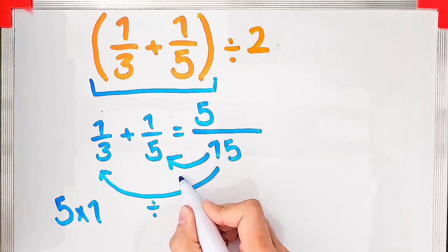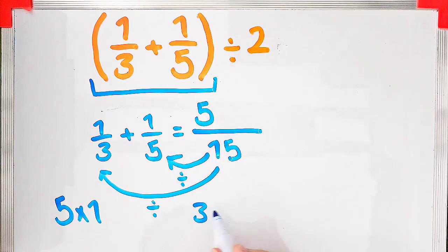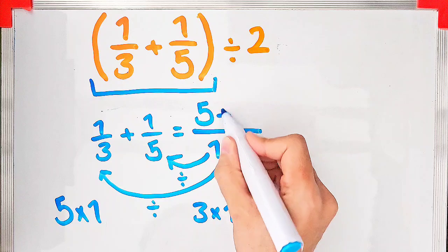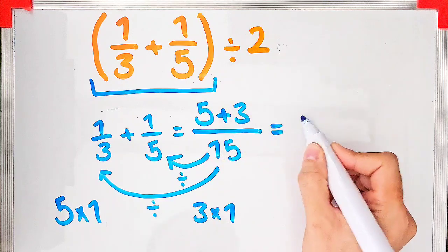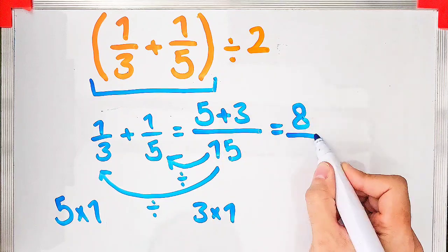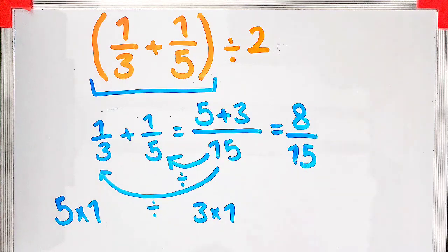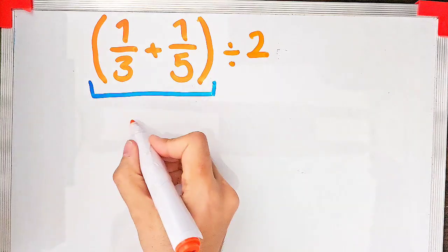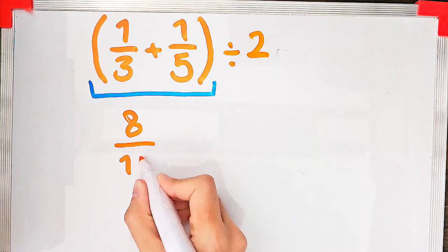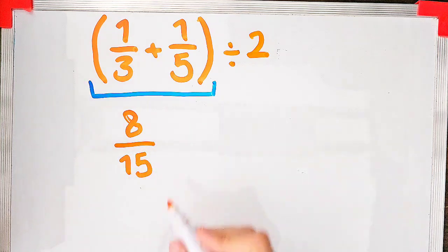15 divided by five equals three, times one equals three. Three plus five equals eight, and in the denominator we have 15. Okay guys, let's solve the second part: 8/15 divided by two.